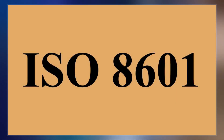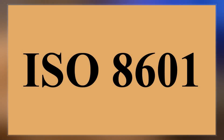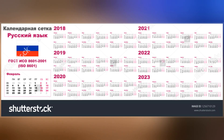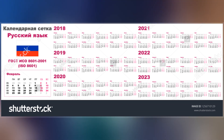In general, ISO 8601 applies to representations and formats of dates in the Gregorian calendar, of times based on the 24-hour timekeeping system, of time intervals, and combinations thereof.